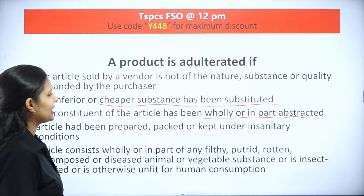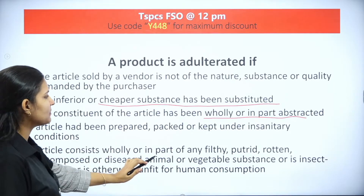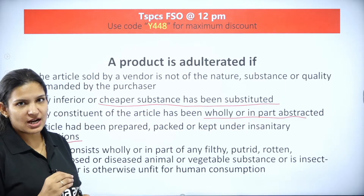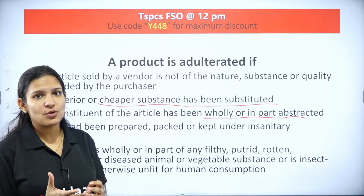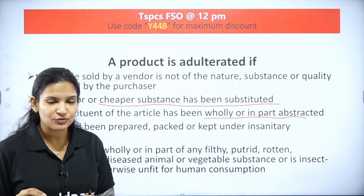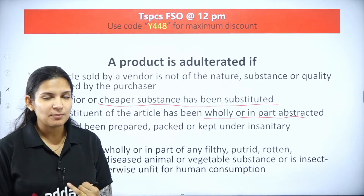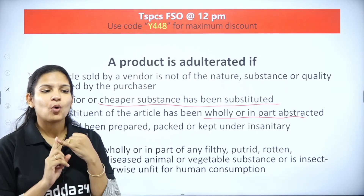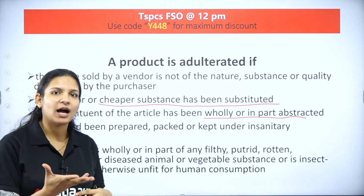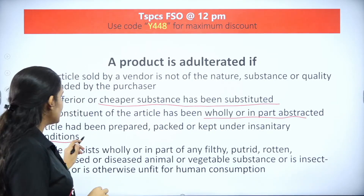The next condition is if the article has been prepared, packed, or kept under insanitary conditions. Even if you are producing a good quality article without adding any cheaper substance or abstracting anything from it, but you are keeping it in unhygienic conditions and contaminating the food - that is also called adulteration. Poor hygiene in handling and packaging comes under adulteration.